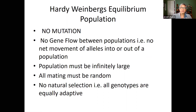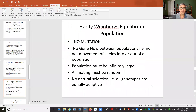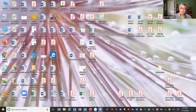We'll stop here at this slide, and next time in the next video we'll talk about Hardy-Weinberg equilibrium. Hardy and Weinberg were two population geneticists who came up with criteria for a population that did not evolve — what conditions would have to be in place for a population not to evolve. We'll talk about that again next time. I hope you enjoyed the lecture, and I will see you all on the flip side. Have a great day. Bye bye.